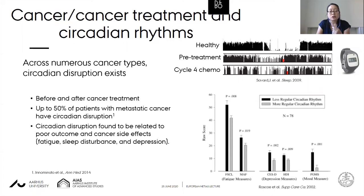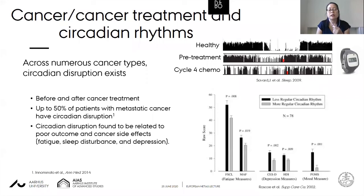Circadian disruption is also found to be related to poor outcome and cancer side effects. Looking at fatigue, depression, and mood measured in a study, those with less robust circadian rhythms had higher levels of fatigue, depression, and mood disturbance compared to those with more robust circadian rhythms.